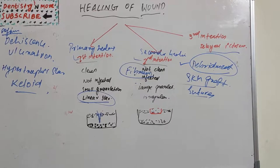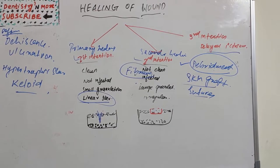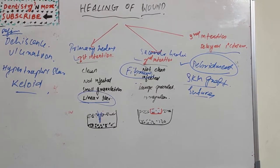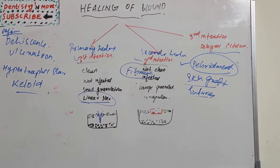So those are the complications of wound healing. The basic topics covered are: types of wound healing — primary, secondary, and tertiary — the stages of wound healing, and the complications. That's all about healing of wounds. A new topic in pathology will be coming up next. Thank you.